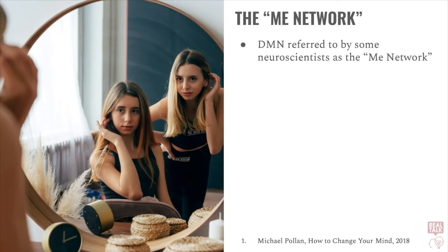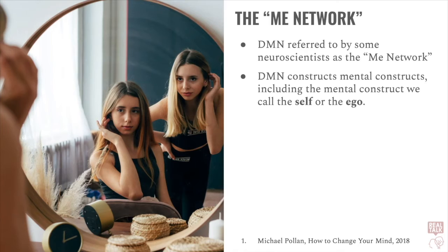So the experience that adults have of looking at a tree is just fundamentally different than the experience that children have when they see trees for the first time. The default mode network is referred to by some neuroscientists as the "me network," because it plays a role in the construction of mental constructs, including the mental construct we call the self or the ego.